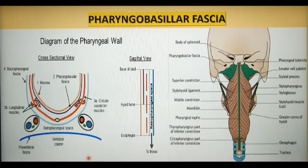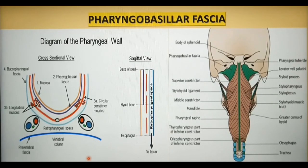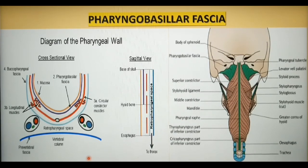That is all about the fascial layers of the neck in brief. In subsequent lectures, we shall discuss in detail the clinical significance of important fascial spaces and how odontogenic infection spreads to each of them. Thank you.